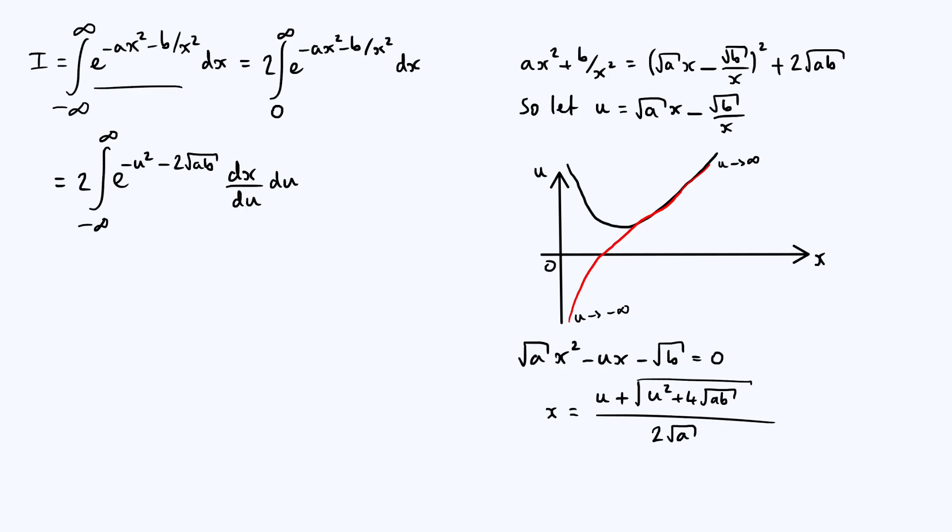So you can now take that equation for x in terms of u, take the differential of both sides, and get dx in terms of du. But we can actually use another symmetry trick to make our lives a lot easier. Let's just tidy up this integral a little bit, and then we'll see what that trick is. So we can take the e to the minus 2 root ab factor out, because that doesn't depend on u or on x. So 2 e to the minus 2 root ab integral from minus infinity to infinity of just e to the minus u squared dx by du du.